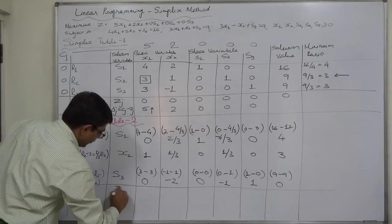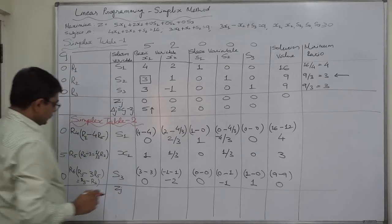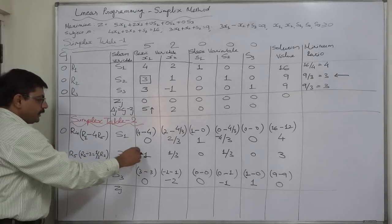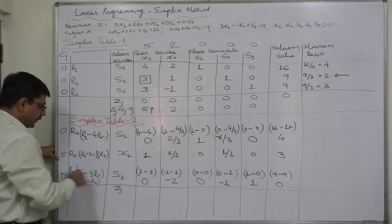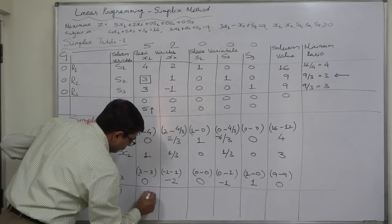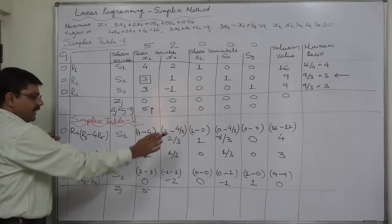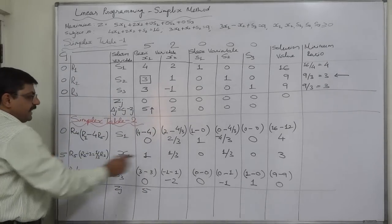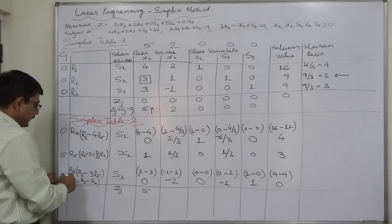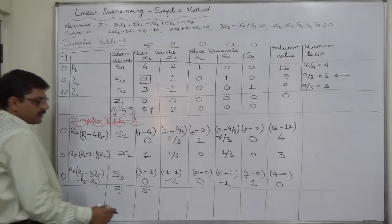Now we can find the ZJ values. ZJ is 0 into 0 is 0, plus 5 into 1 is 5, plus 0 into 0 is 0, giving 5. Then 0 into 2/3 is 0, 5 into 1/3 is 5/3.